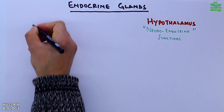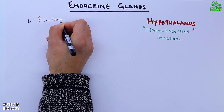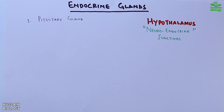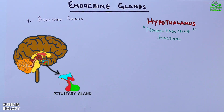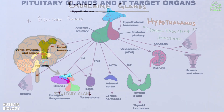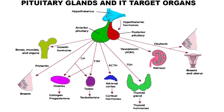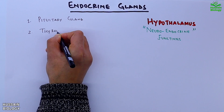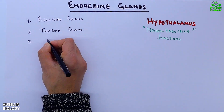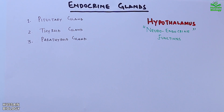The first gland is the pituitary gland, which has been shown in the diagram. This pituitary gland has various target organs and it controls and regulates them via hormones. Here in this diagram the target organs of the pituitary gland have been shown. Second is the thyroid gland. Third is the parathyroid gland.